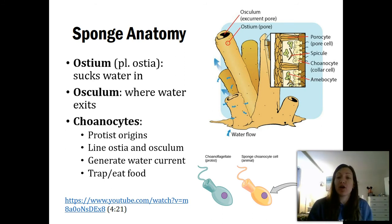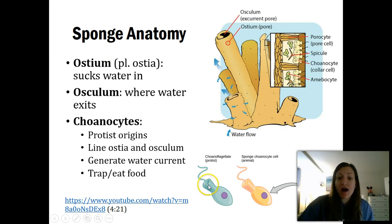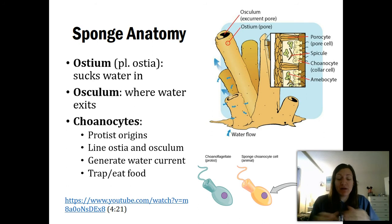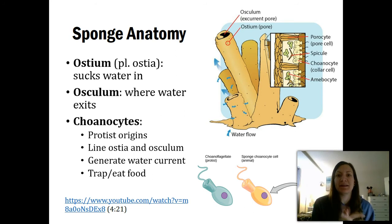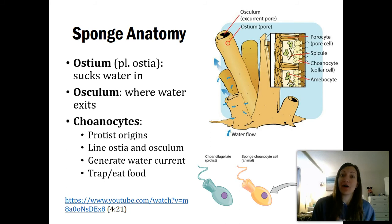Essentially, sponges are just generating a water current. Not only are these choanocytes creating the current, but this portion of the choanocyte actually catches food — it filters the water. That's why we need that water moving: the choanocytes filter the water, grabbing out algae, bacteria, or some sort of micro-plankton in order to eat it. And that's pretty much a sponge — not really that complex.